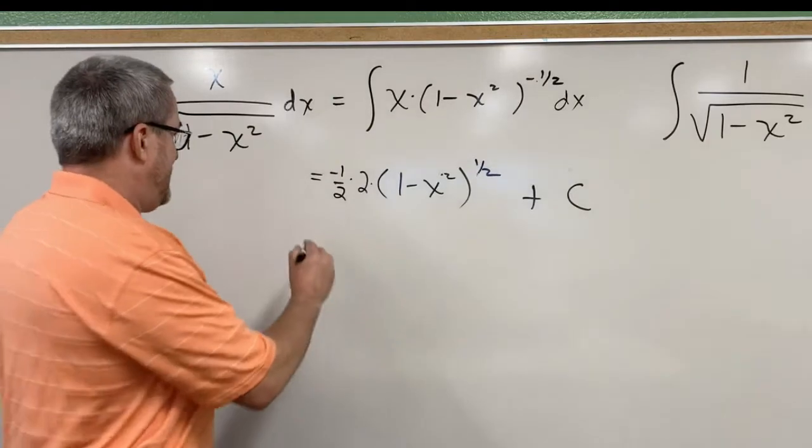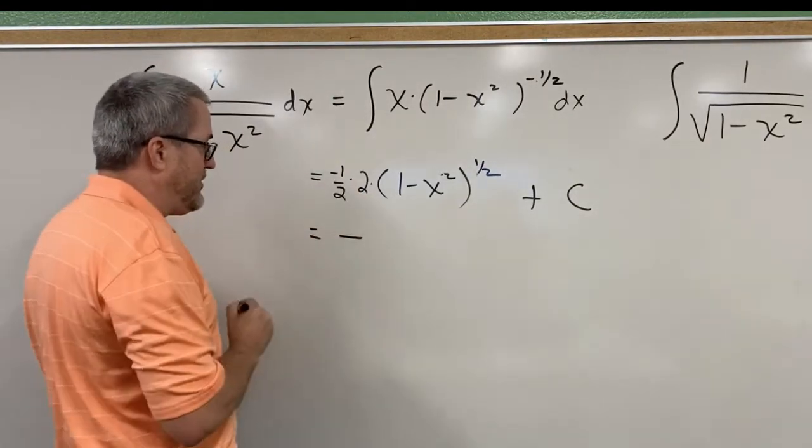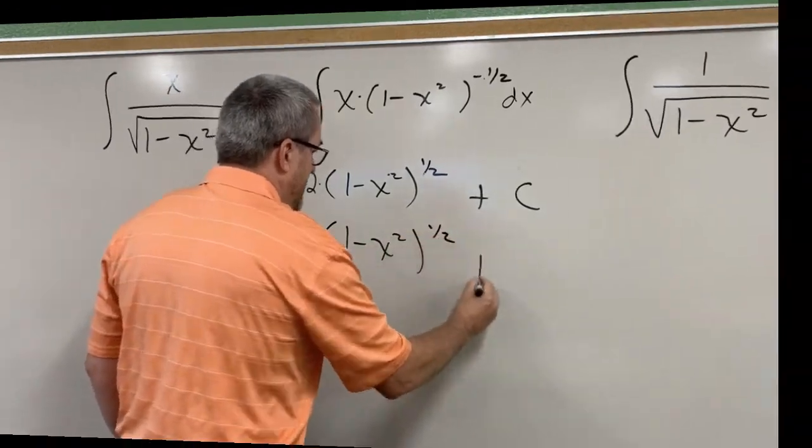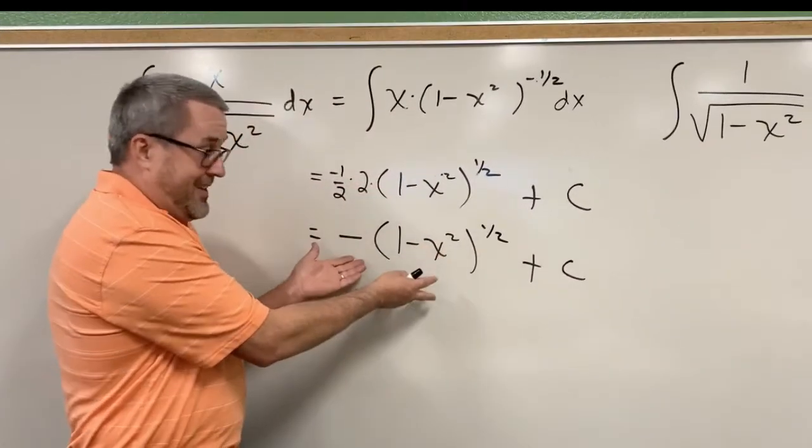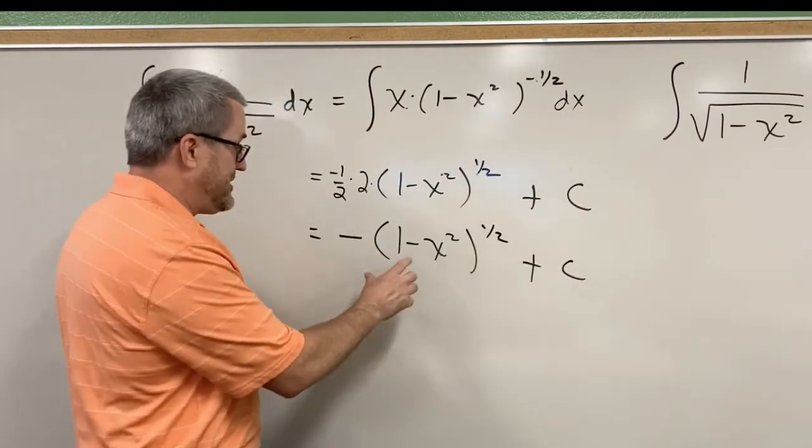Don't forget your constant of integration, plus c. And let's just clean this up a little bit. So negative one-half times 2 would be just negative 1, 1 minus x squared to the one-half, plus c. So we get this beautiful result.